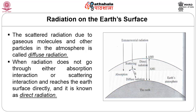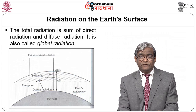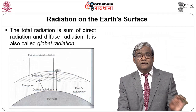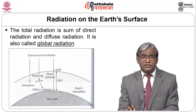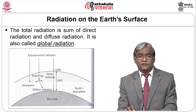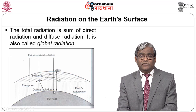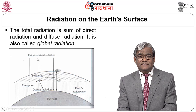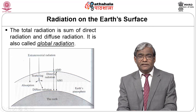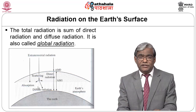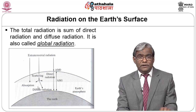On the earth we receive both direct radiation and diffuse radiation. The total — the sum of direct and diffuse radiation — is called global radiation. In the extraterrestrial region radiation is constant, but in the terrestrial region it is split into direct and diffuse components, and their sum is global radiation.